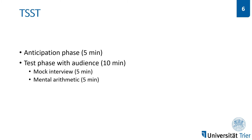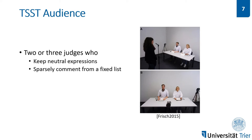The TSST consists of an anticipation phase in which the participant is instructed to prepare for a job interview at a job of his choosing. After five minutes, the mock interview begins in front of an audience, which concludes in another five minutes when the participant has to perform some mental arithmetic, usually counting backwards in steps of 13 or 17 from a number such as 1022. The mock interview and the arithmetic task are conducted in front of an audience consisting of two or three judges. The judges are trained to keep a neutral expression throughout the test. Usually, there is one active judge who occasionally makes small comments from a fixed list — for example, if the participant stops talking for too long or makes a mistake during the arithmetic task. An example comment would be, "What are your strengths?" to nudge the participant to continue talking.